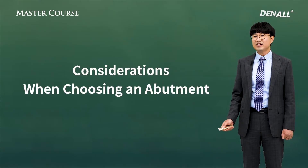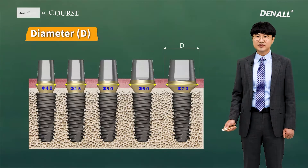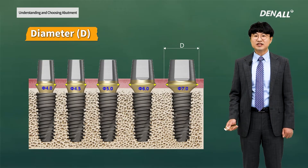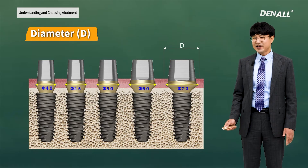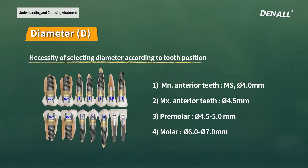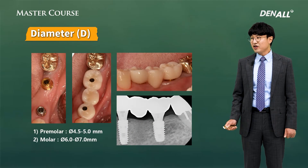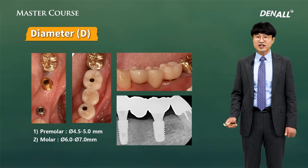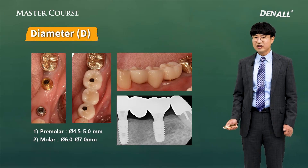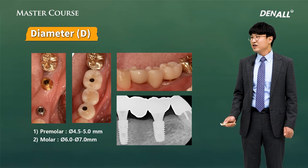Considerations when choosing an abutment: diameters of abutment range from 4.0 to 7.0. Depending on the situation, a proper diameter should be chosen. For the lower anterior region, a small one would be chosen, and as you go towards the posterior region, a wider diameter abutment would be chosen in general. For premolars, I usually use 4.5 to 5.0 mm. For molars, I usually use 6.0 to 7.0 mm.